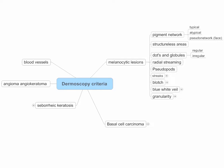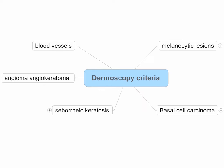In this podcast, in part three, we're going to cover radial streaming, pseudopods, streaks, blotches, blue-white veil, and granularity.